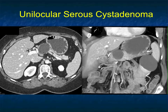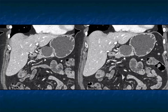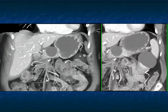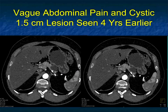Here's a nice case — a lesion in the body of the pancreas, well defined. This could be an IPMN, but I would like to see a dilated pancreatic duct, or at least communication like IPMNs have — I don't see that. In the right age group, this could be a mucinous cystic neoplasm. It could also be a pseudocyst with the right clinical history. The lesion is very well defined, very sharp margins, no enhancement, no septations, and no duct dilatation.